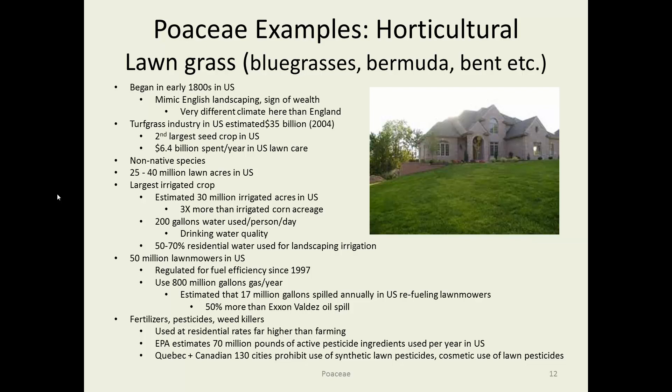Lawn is our largest irrigated crop. Some estimates are as many as 30 million irrigated acres in the U.S., which is three times more than our irrigated corn acreage. When it is irrigated, it's usually up to 200 gallons of water used per person per day to irrigate that crop across the United States — and remember, that's drinking water quality, purified to be safe for humans and then used to keep your lawn fresh. In some cases, 50 to 70 percent of residential water used is for landscaping irrigation.